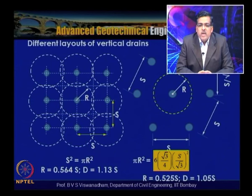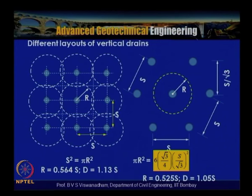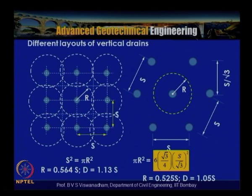For a square layout, the effective diameter De is equal to 1.13S, and for a triangular layout De equals 1.05S, where S is the drain spacing. The procedure for calculating these was already discussed.